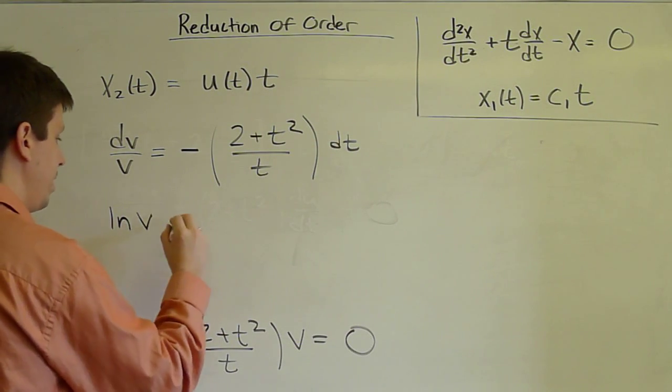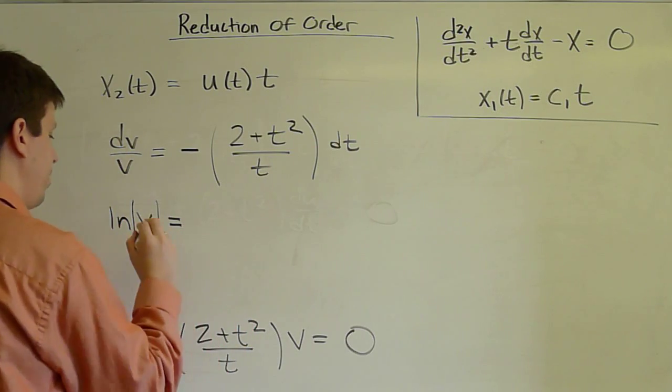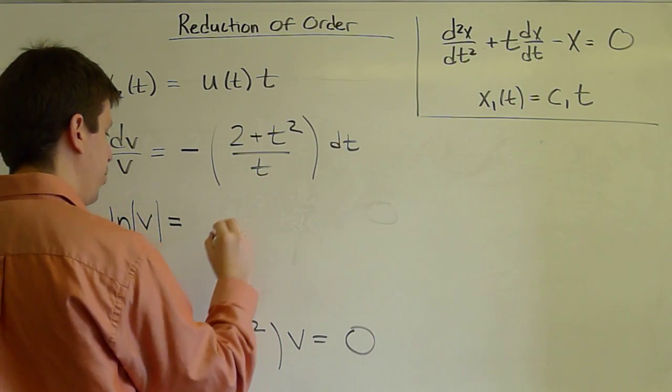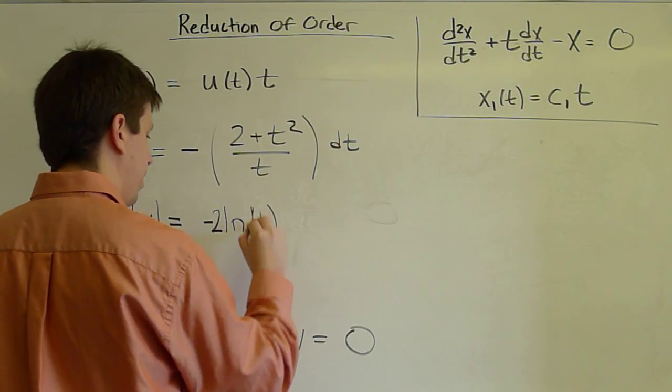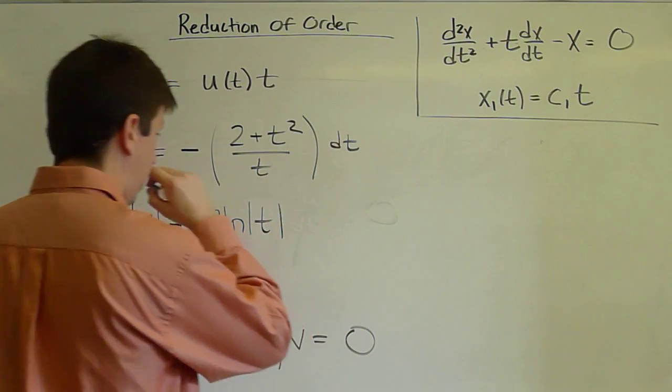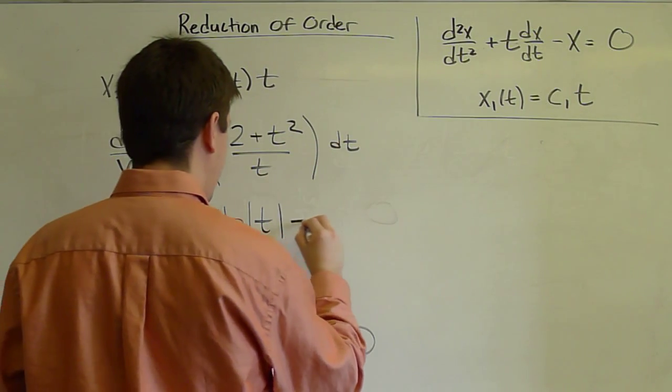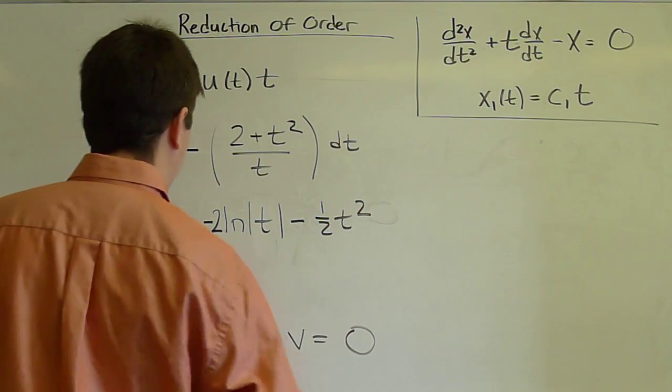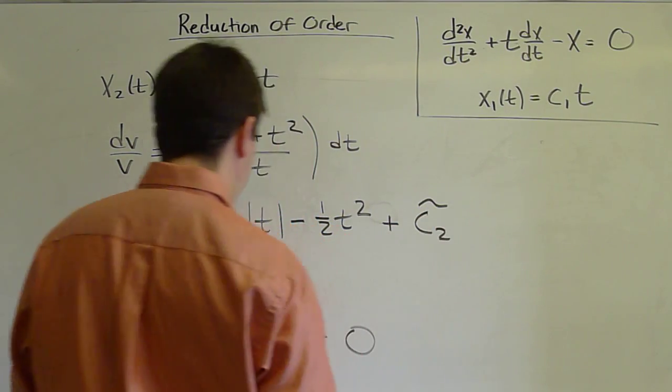We get ln|v| equals on the left-hand side. When we integrate negative 2/t, we get negative 2 ln(t). Again, technically absolute values. Minus t²/t gives us a minus t. When we integrate that, we get minus one-half t² plus an integration constant, which I'll call c2 tilde.